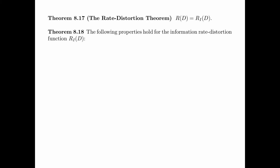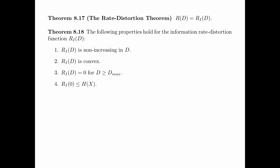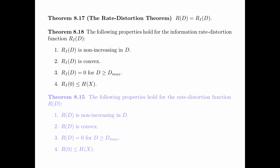We now prove a few properties of the information rate distortion function R_I(d). First, R_I(d) is non-increasing in d. Second, R_I(d) is convex. Third, R_I(d) equals 0 for d greater than or equal to d_max. Fourth, R_I(0) is less than or equal to the entropy of x. Comparing with theorem 8.15 for the rate distortion function R(d), these four properties are exactly the same four properties proved for R(d). The idea is that if R_I(d) equals R(d), it must satisfy the same four properties.